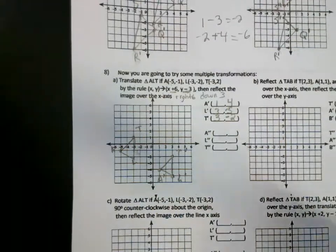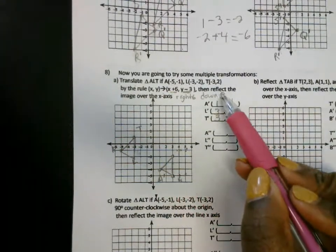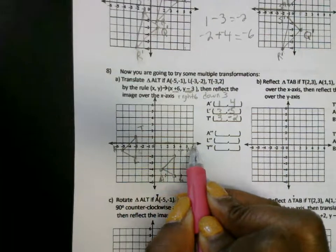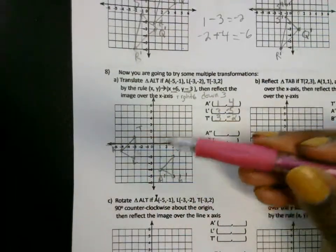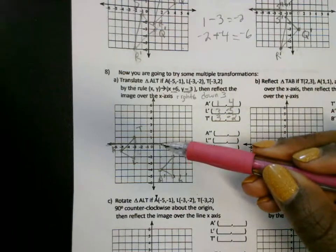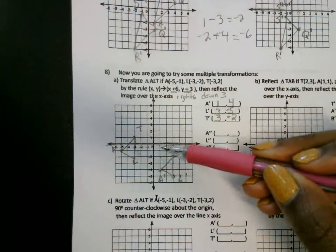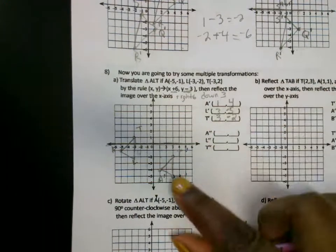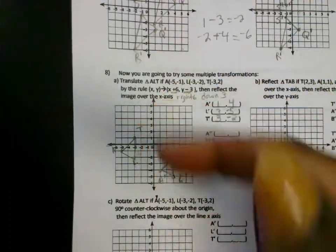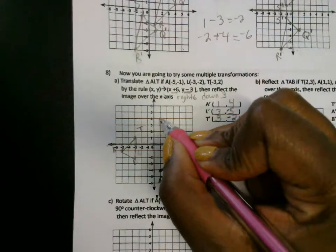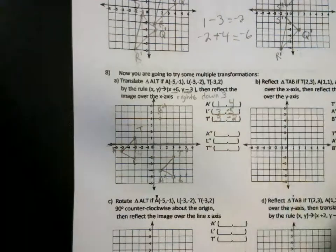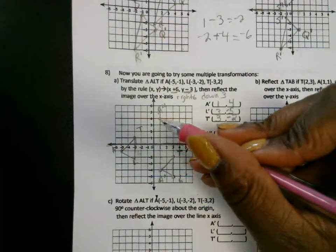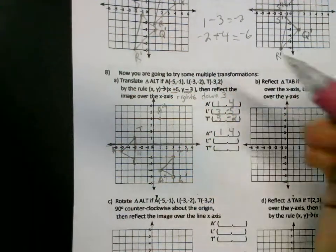Now you're going to take it and move it a third time — you're going to reflect it over the X. So now you're going to flip this over the X axis. We've got A. How far is A away from the X axis? Count: one, two, three, four. So when you flip it, it's going to be four above. If I fold this, where would it land up here? It would land at four. This is A prime prime — the second time I moved A. That ordered pair is one, two — one, two, three, four.